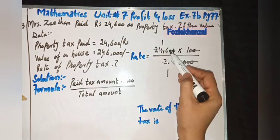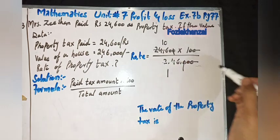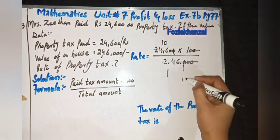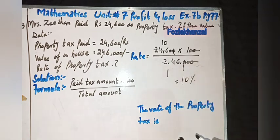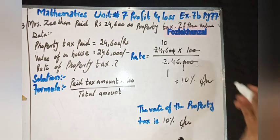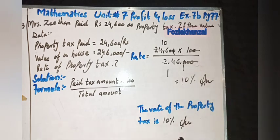Ones are 46, this zero as it is goes up. So the rate is 10%. The value of the property tax is 10%. Done, part first, second, and third in this video.